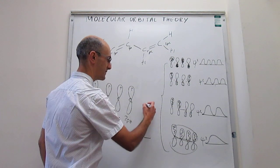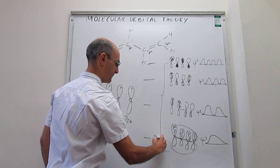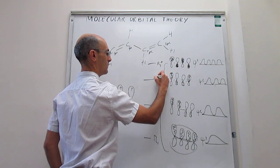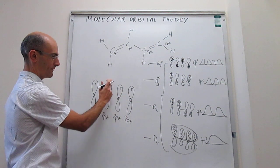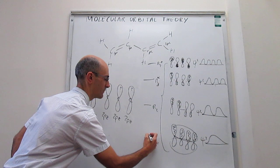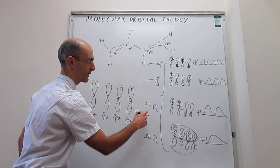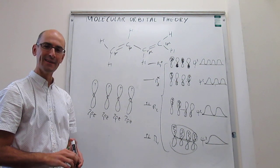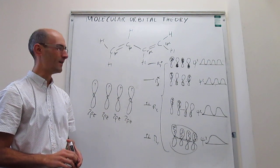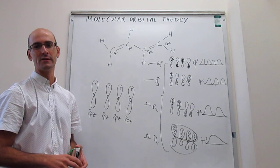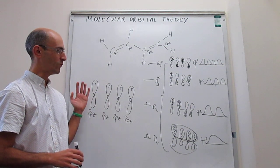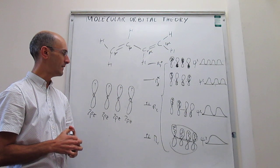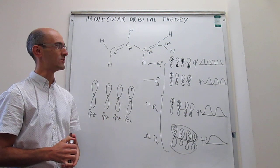We now have four molecular orbitals labeled pi1, pi2, pi3, and pi4. Pi3 and pi4 are antibonding; pi1 and pi2 are bonding. We have a total of four electrons in the pi cloud, so they fill the two bonding orbitals with no electrons in the antibonding orbitals. This clearly explains the electron delocalization in butadiene and other molecules called polyenes. We invoke molecular orbital theory across the entire molecule through the pi orbitals, and that explains electron delocalization.